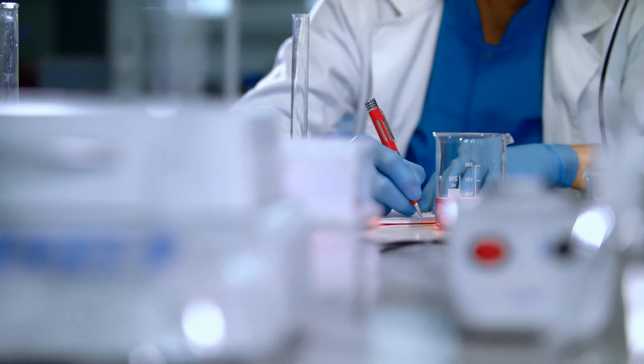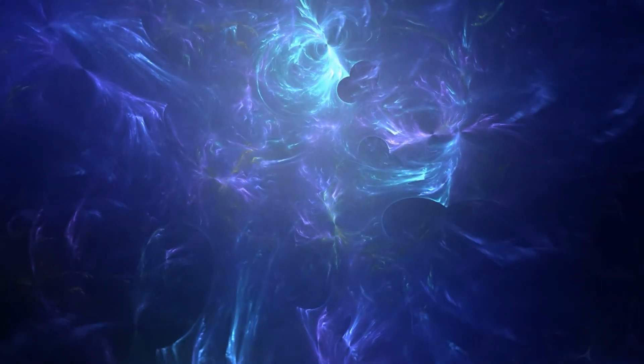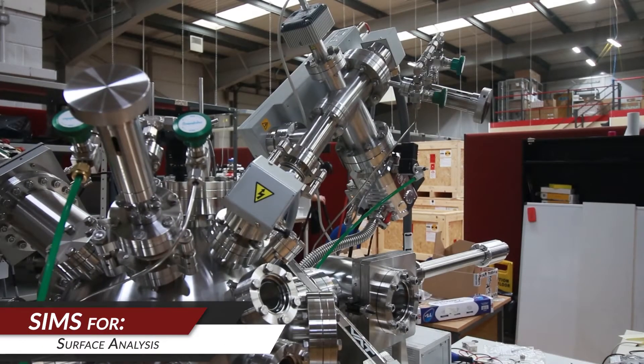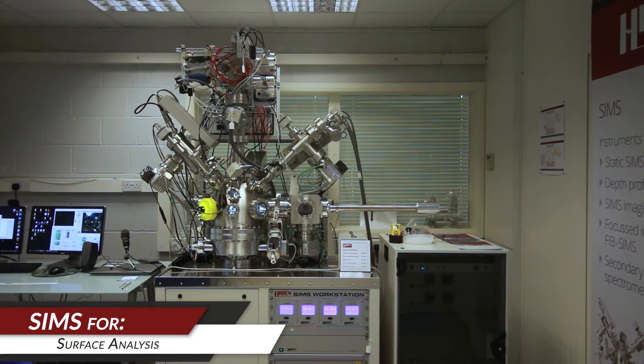SIMS is secondary ion mass spectrometry and it actually allows us to do mass spectrometry on a solid material. So normally we'd be doing mass spectrometry with a gas or a finely divided material entered into the vacuum. Here we can put a solid sample into the vacuum and actually measure it. So we fire a beam of ions at the sample.